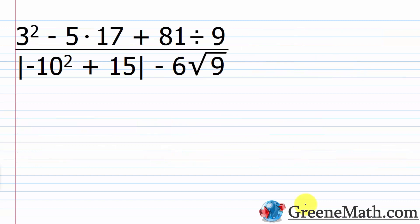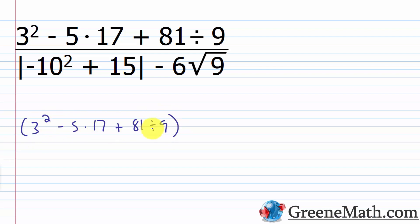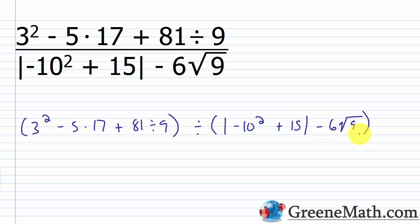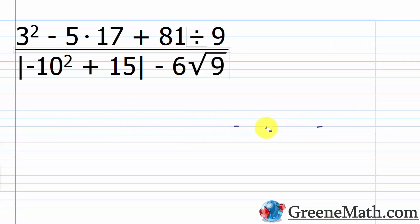Let's look at an example involving a fraction. The first thing to note is that you work separately in the numerator and denominator. In the numerator we have: 3 squared minus 5 times 17 plus 81 divided by 9. In the denominator we have: the absolute value of negative 10 squared plus 15, minus 6 times the square root of 9. I'll simplify the numerator first, then the denominator, and then perform the division.